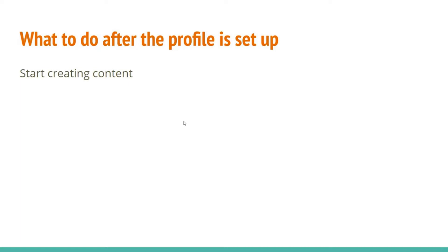Content is what you create on LinkedIn — a post, a video, an image, or something you write and post. Treat content as a means to attract people. It basically says: I'm still here, this is my thought for today or this week. Ideally you should post three or four times a week, but practically at least once a week — like a heartbeat. Post something of quality that is relevant to your target audience.